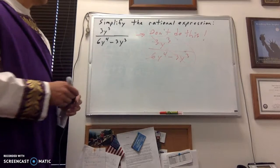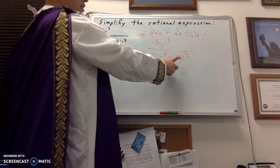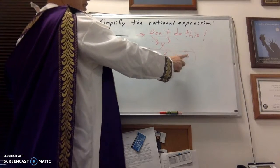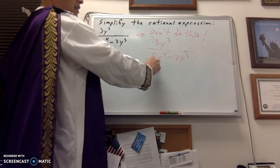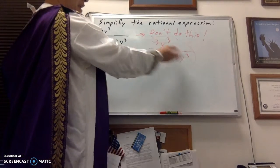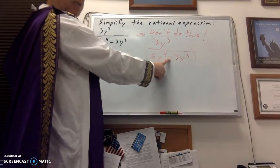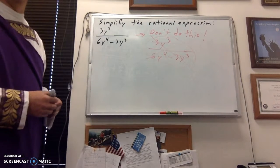So, again, what you're trying to divide out needs to be getting multiplied to the entire numerator and the entire denominator. This 3y cubed in the denominator, it's getting subtracted from the 6y to the 4th. That's what's making it so that we can't do this dividing out thing. If that sign was a multiplication symbol instead, then yes, you could have.